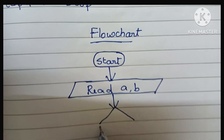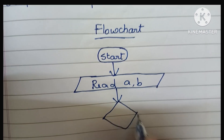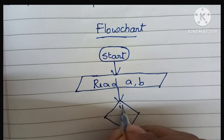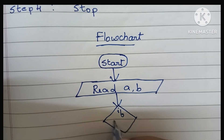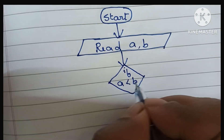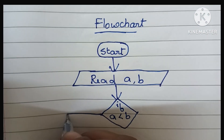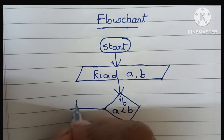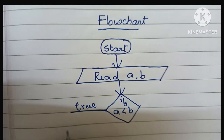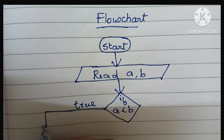Next, we have to compare two variables. Comparison is done within a diamond shape — if a is less than b. If this condition is true, the output is 'a is smallest'.